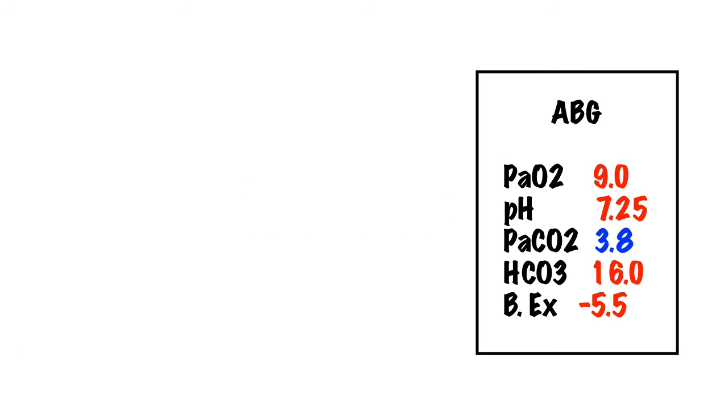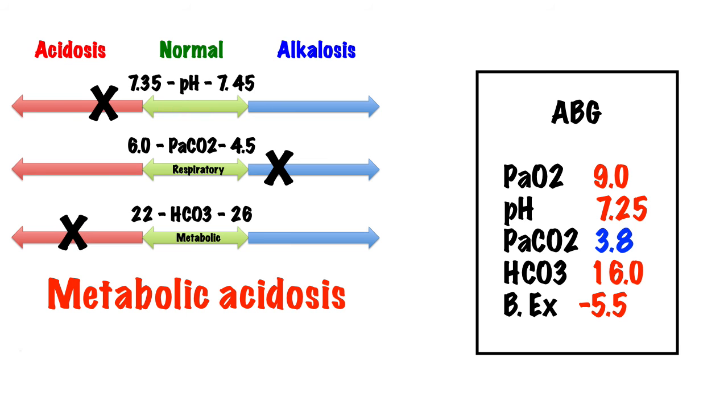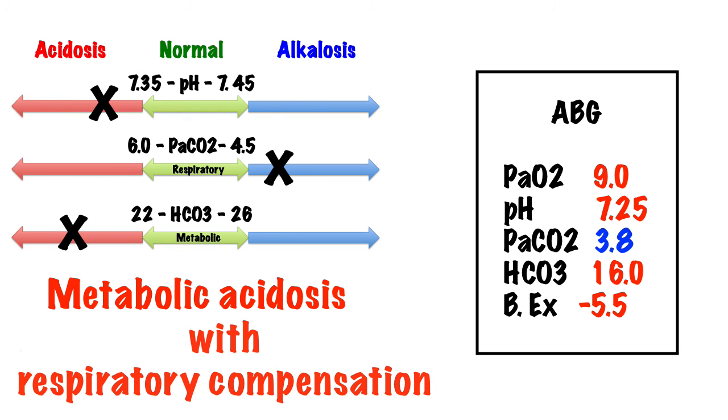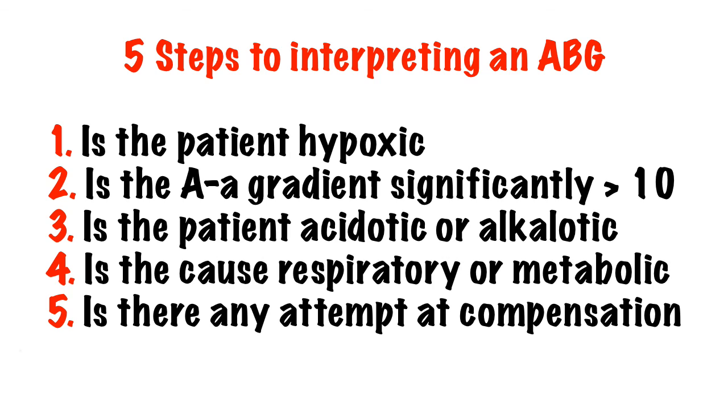If you ever struggle to work out what's going on with an ABG try drawing this diagram and plotting the figures. Whatever is on the same side of the pH is the cause of the acidosis or alkalosis and if there's anything in the opposite direction then that's compensation. Try to see as many blood gases as you can and get used to looking at them, interpreting them and working out why this is happening. Good luck.